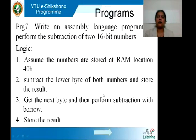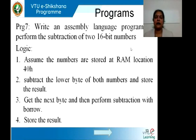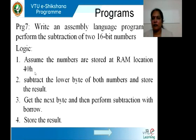Let us move on to the next program: write an 8051 assembly program to perform the subtraction of two 16-bit numbers. This is similar to the addition program we did previously — instead of addition, we will use subtraction. The data is held at location 40H, where 40-41 will be the first 16-bit number and 42-43 will be the next 16-bit number.